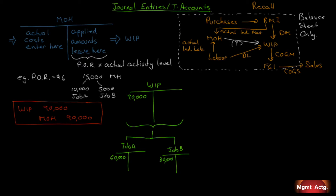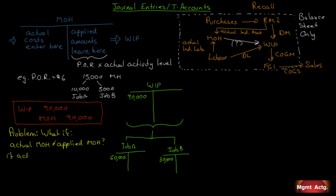Now, somebody looking at this may say, I see a problem. What if the actual manufacturing overhead costs that you incur do not equal what you apply? You get to the end of the year and say: we incurred a million dollars in actual costs, but we only applied $800,000. If the actual amount incurred is greater than what you applied, you've underapplied — we should have charged more. But you may end the year where your actual costs are less than what you applied — you applied too much. You overapplied.